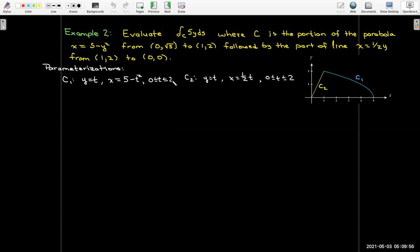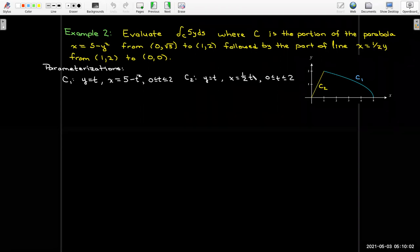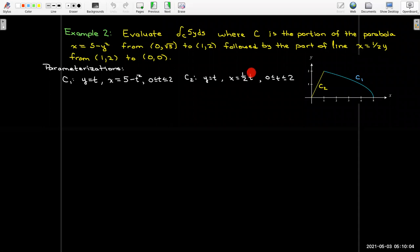For the line segment, I'll take advantage of the equation that we have here. I'm going to have an independent variable of y. So y will be t again, and then x will be (1/2)t. And again, looking at the y values on this curve, they go from 0 to 2.